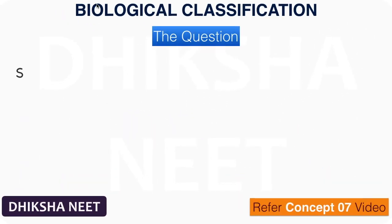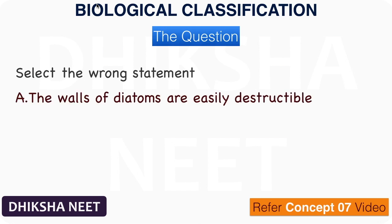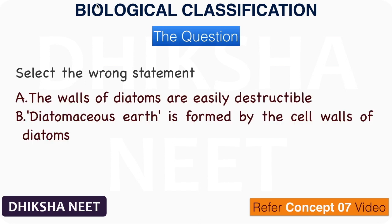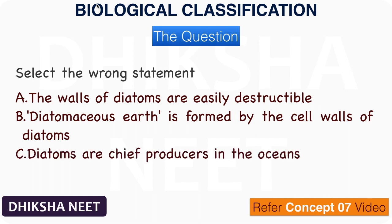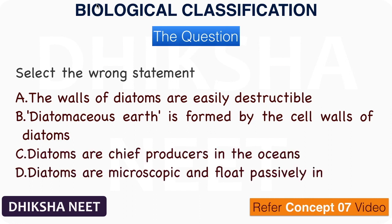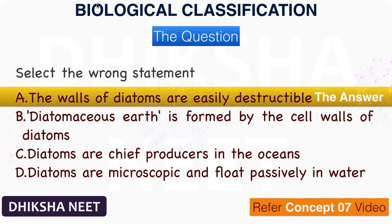The question: Select the wrong statement. A. The walls of diatoms are easily destructible. B. Diatomaceous earth is formed by the cell walls of diatoms. C. Diatoms are chief producers in the oceans. D. Diatoms are microscopic and float passively in water. The answer is option A. The walls of diatoms are easily destructible is the wrong statement.